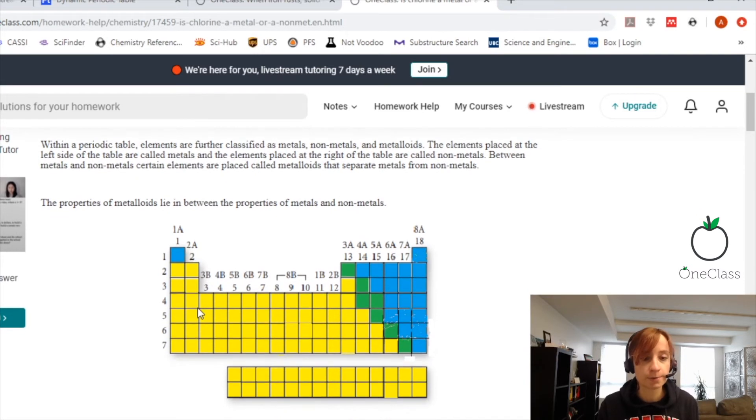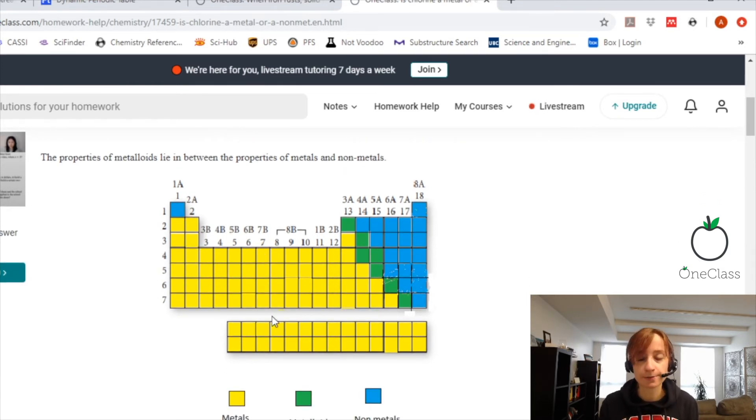So within the periodic table, the elements are further classified as metals, non-metals, and metalloids. So here, all the elements in yellow are the metals. All the elements in blue are non-metals. And in green are the metalloids, which form this kind of like staircase divide between the metals and the non-metals.